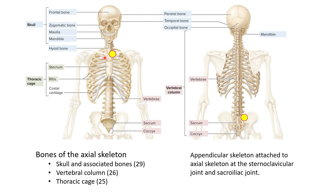In terms of functions, we discussed several functions of the skeletal system as a whole, and probably one of the most obvious was muscle attachment, which is certainly true for the axial skeleton as well. The axial skeleton also supports and protects a lot of organs: the brain, spinal cord, heart, lungs, major blood vessels, and most of the internal thoracic and abdominal organs. It also houses the special sense organs found at the skull, and the spongy bone in the axial skeleton is primarily responsible for blood cell formation.